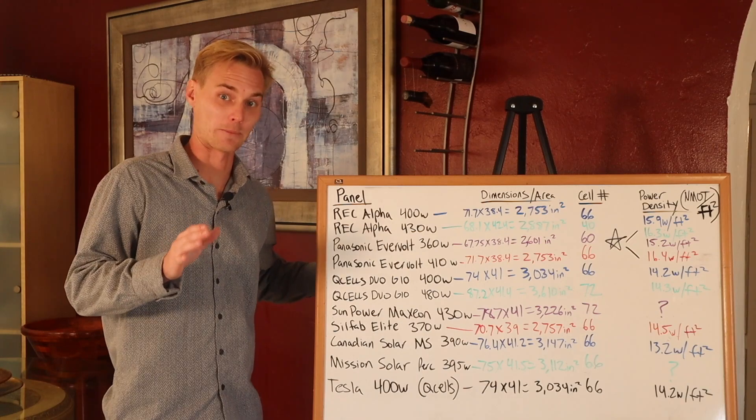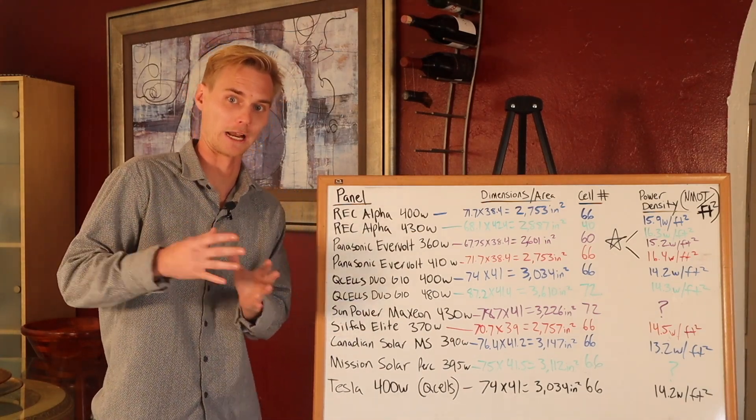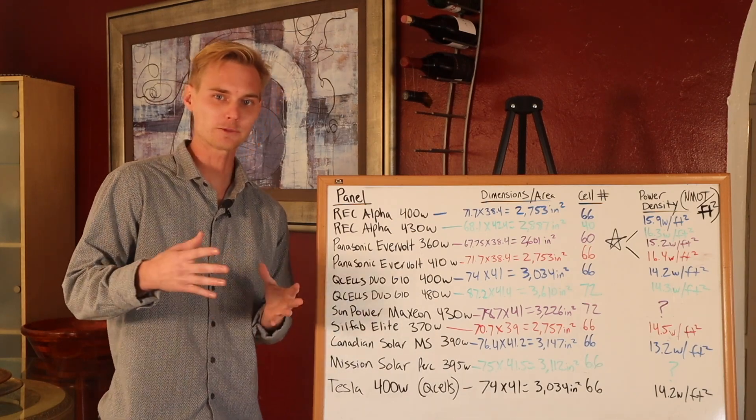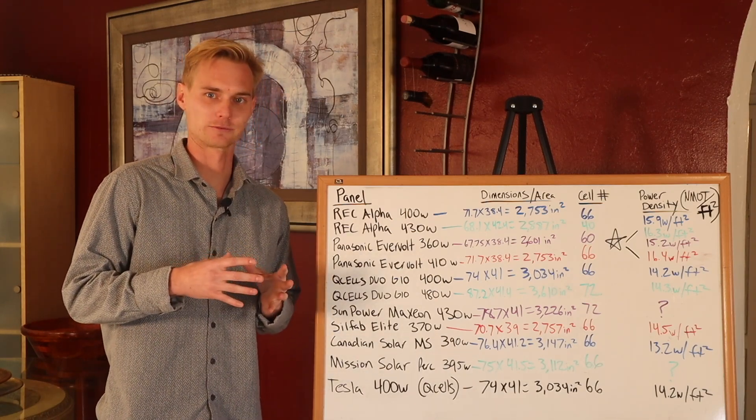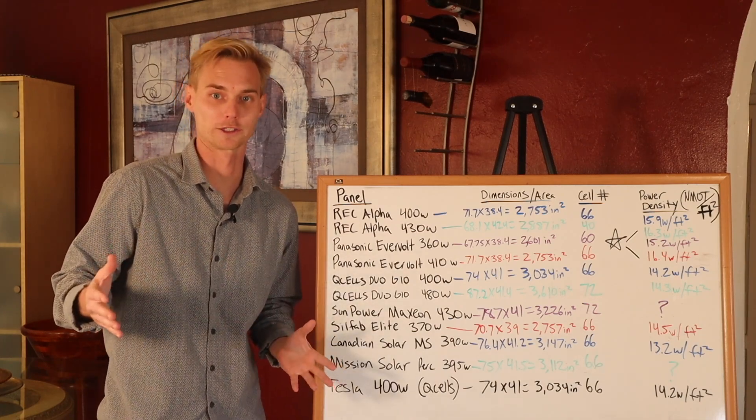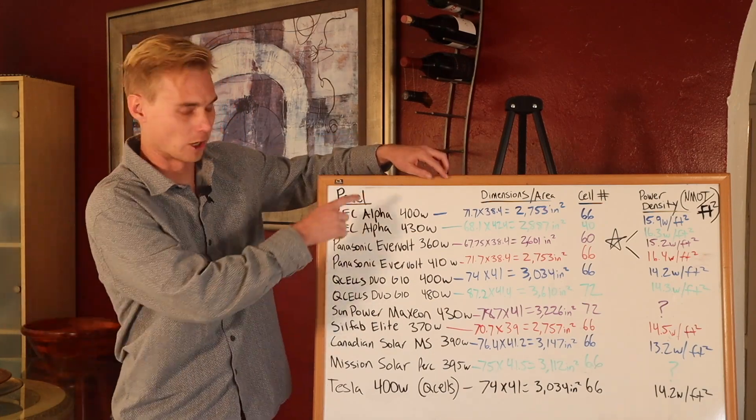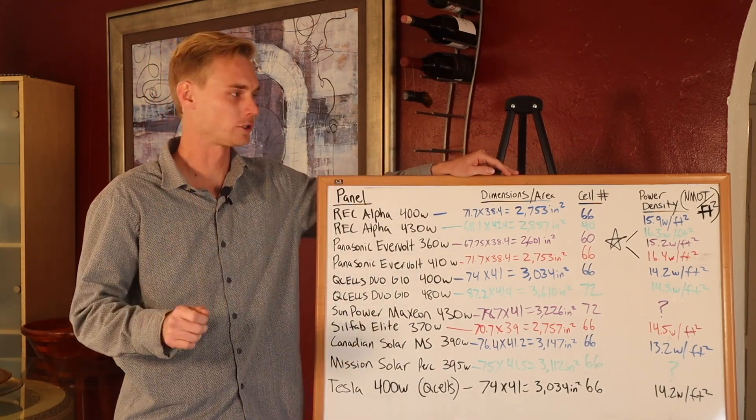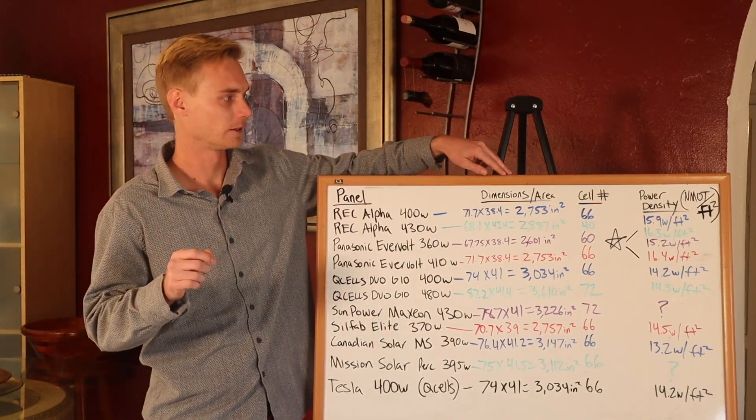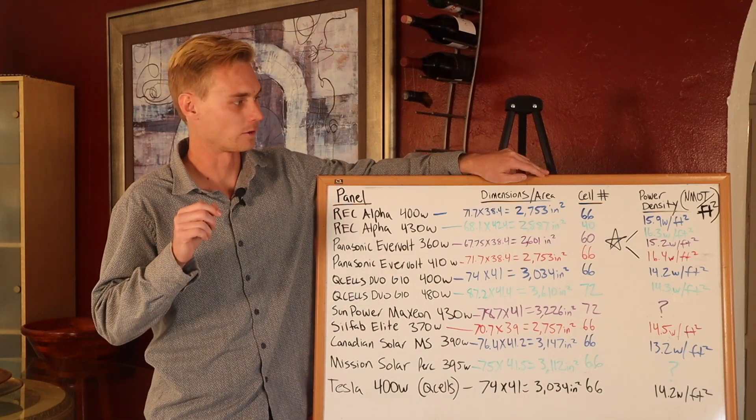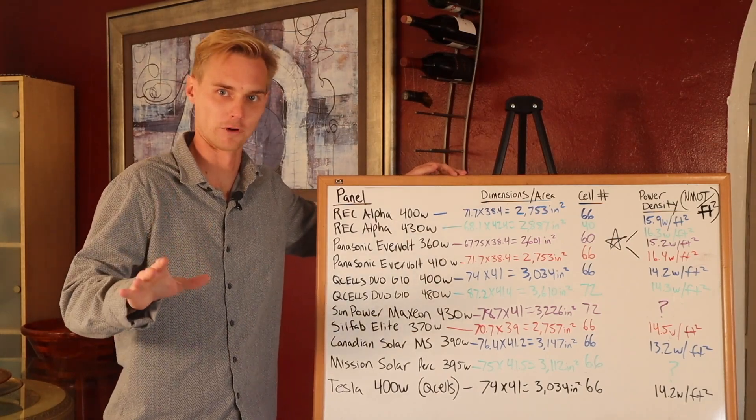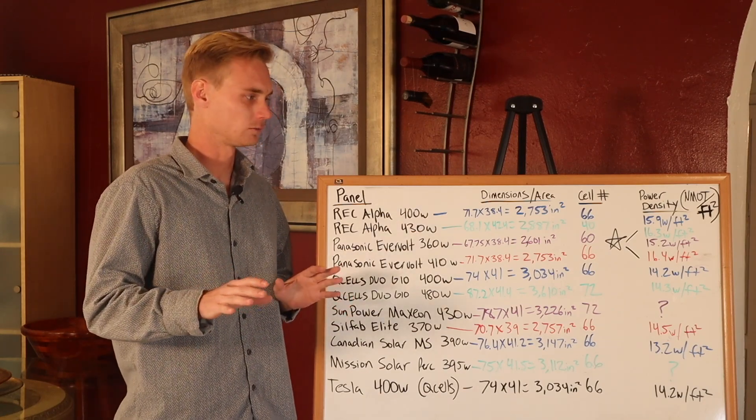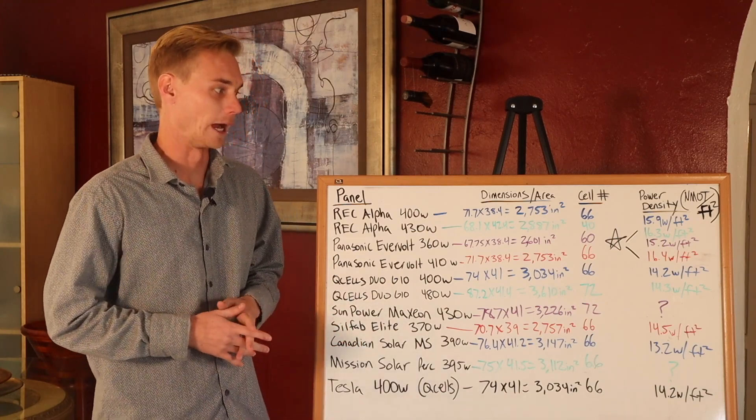There's one spec or factor that we didn't consider on the first board, which is the dimensions and the total area. A trend that is happening right now in the solar industry is instead of making the panels more efficient and actually more power dense, they're just making the panels bigger. They're adding more cells, making the panel bigger basically. What I've done here is I've drawn out all the dimensions and figured out the square inches for each panel.